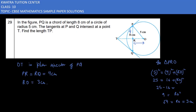Now we can use the similar triangle theorem. We want to find the ratio between the sides. We will take triangles TRP and PRO. In triangle TRP and triangle PRO, we need to identify which two angles are equal.